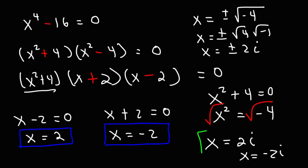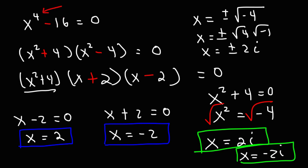So we get a total of 4 solutions, which makes sense because the degree of the leading term is 4. If the exponent is 4, you can get a maximum of 4 solutions — this includes real and imaginary solutions. In this example, we have 2 real solutions and 2 imaginary solutions for a total of 4.